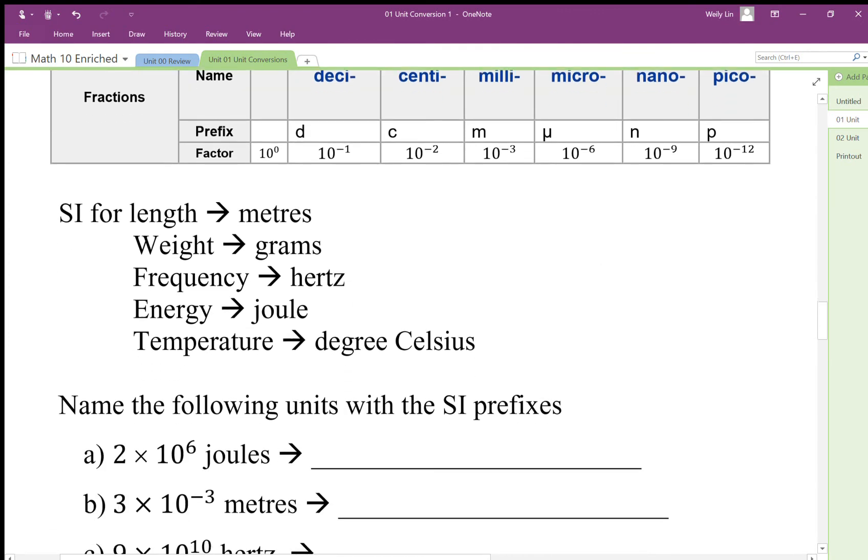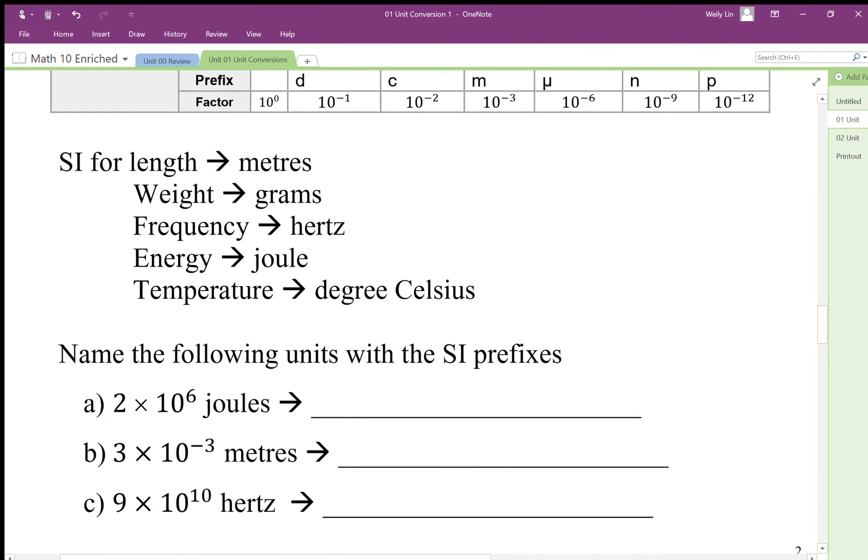For SI length measurement we use meters, for weight we use grams, for frequency we use hertz, for energy we use joules. Sometimes we still use calories a little bit in science.